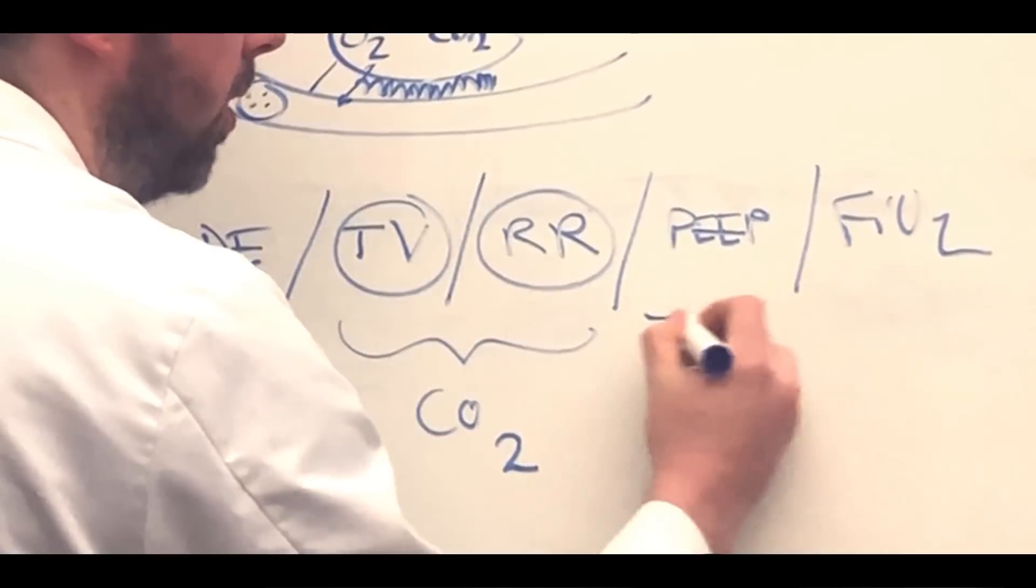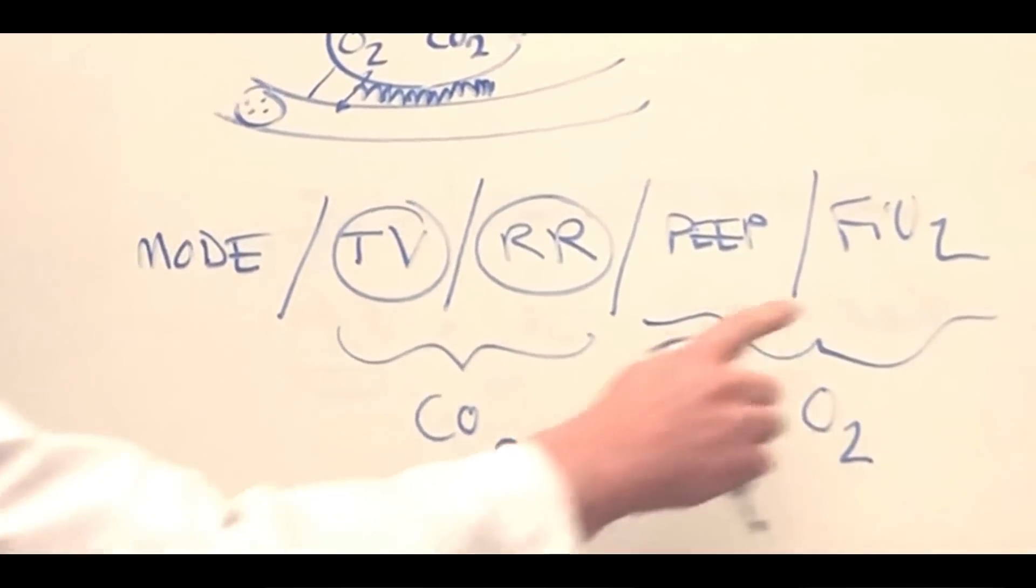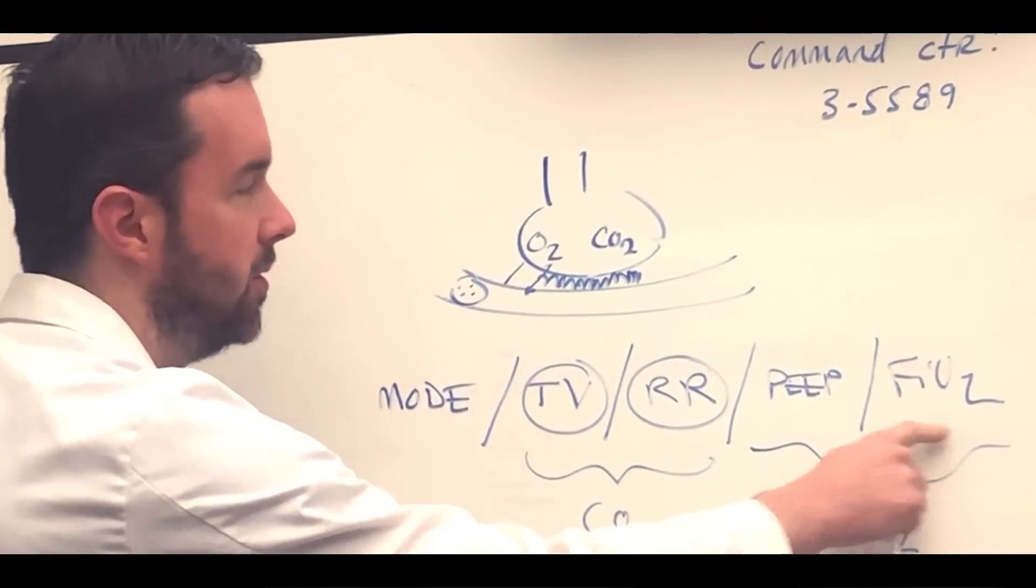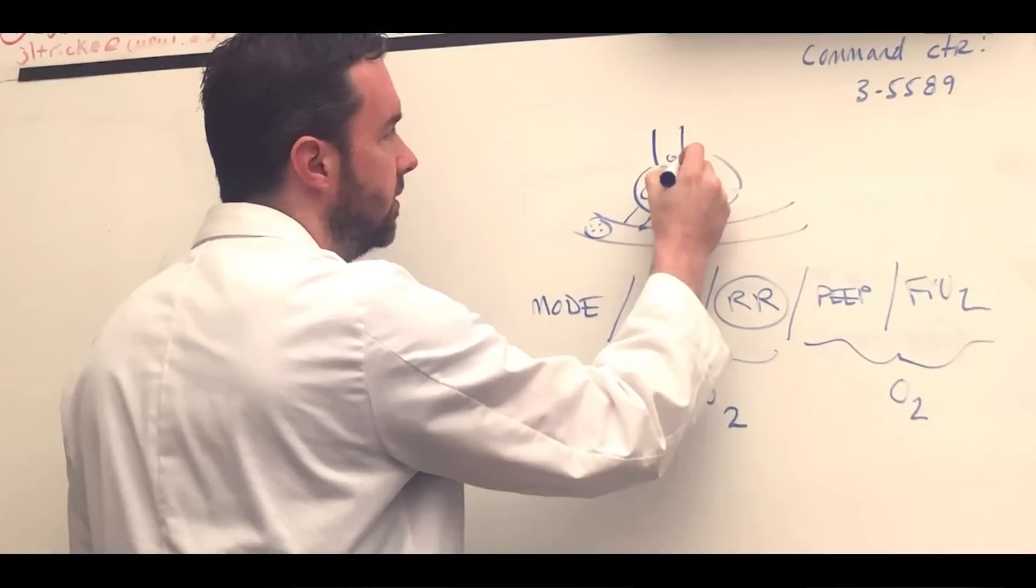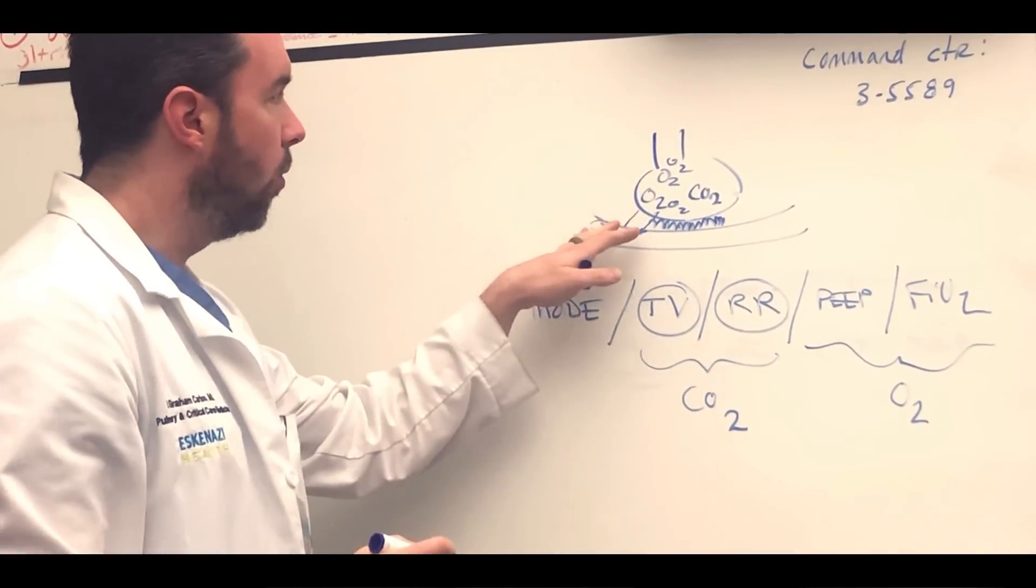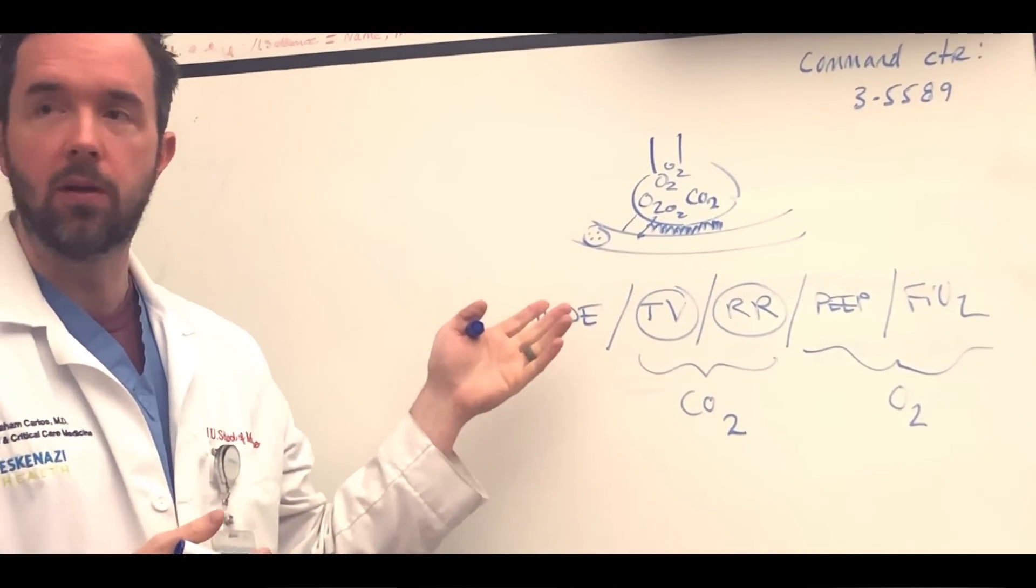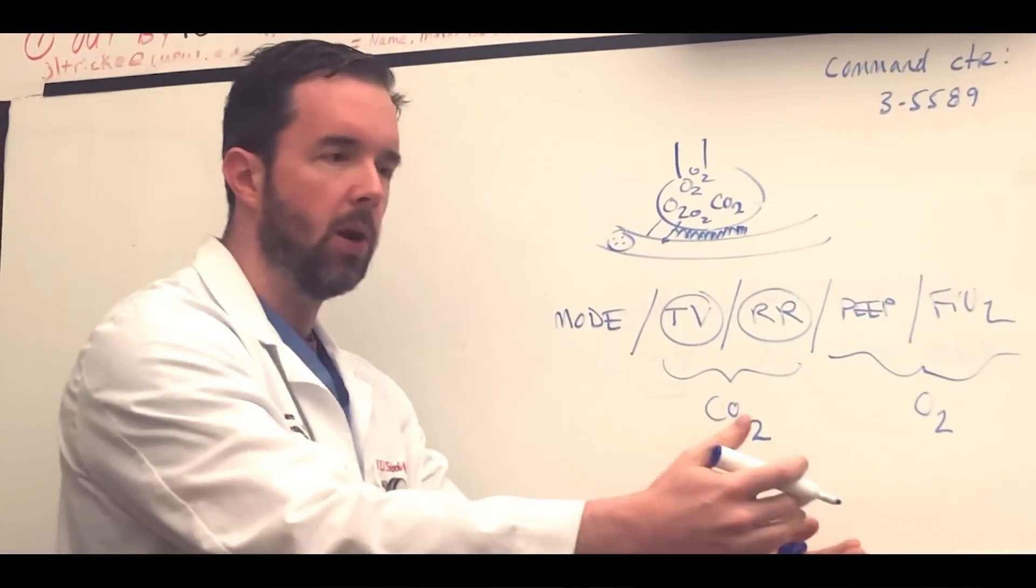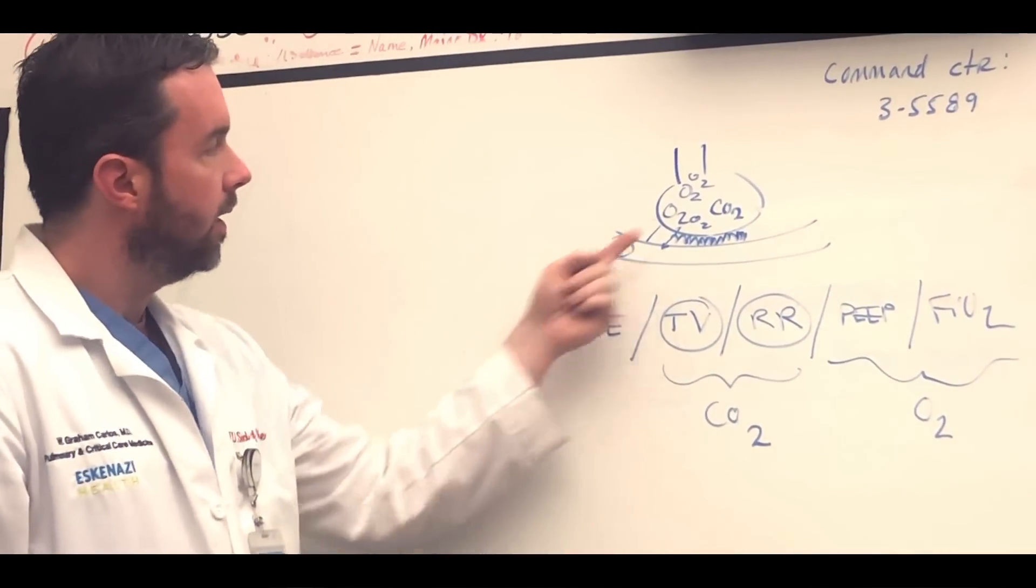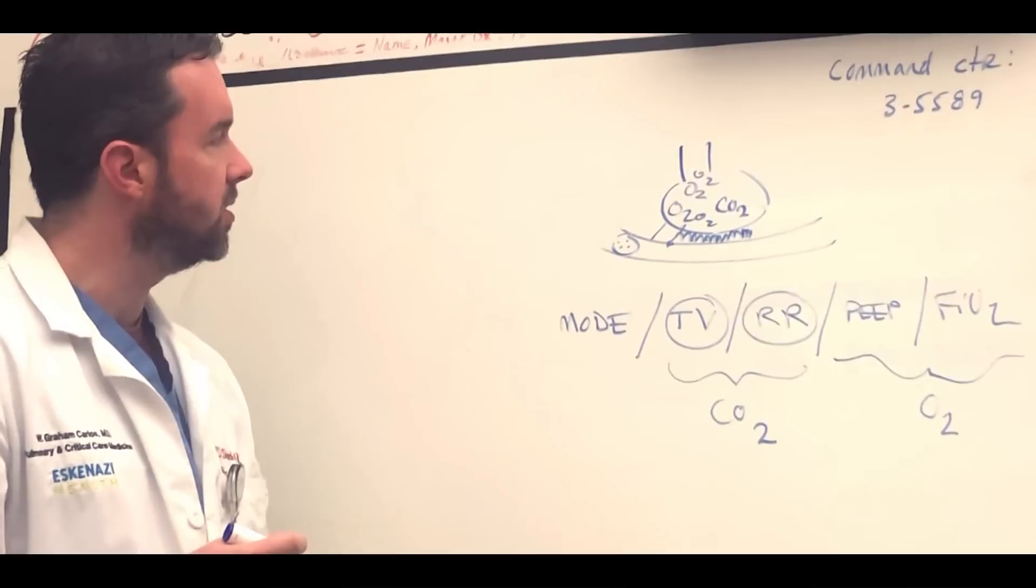PEEP and FiO2 are the things that are going to affect O2. We'll take the last one first, FiO2. If we put more oxygens in the alveolus, we're going to have more ability to get oxygen diffused across and jumping on the hemoglobin. So by increasing the FiO2 from room air, which is 21%, as we go up and up and up, we have more ability to oxygenate. I think that's the most straightforward concept to understand.